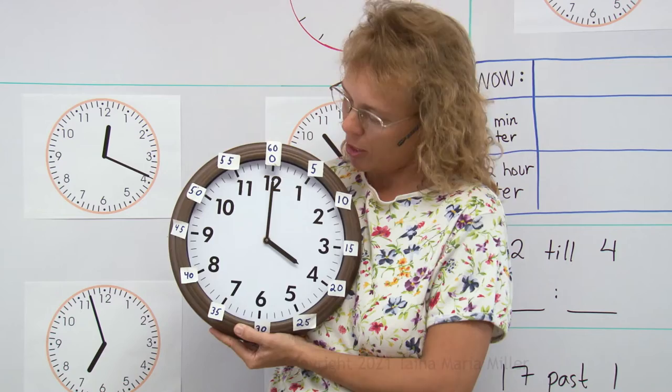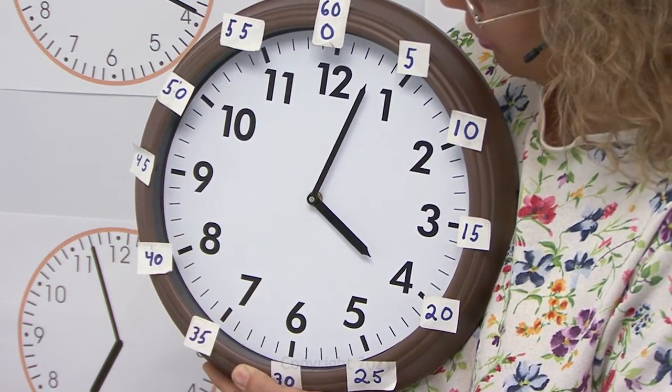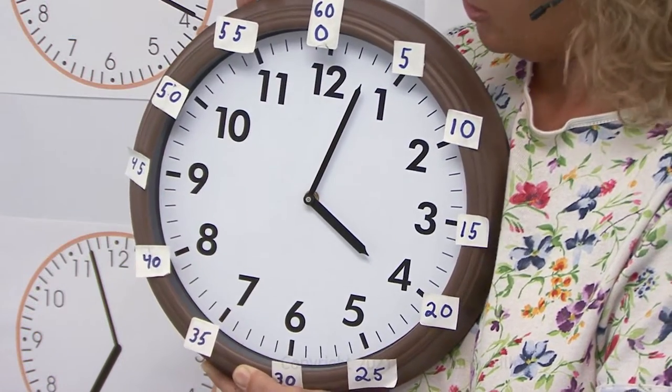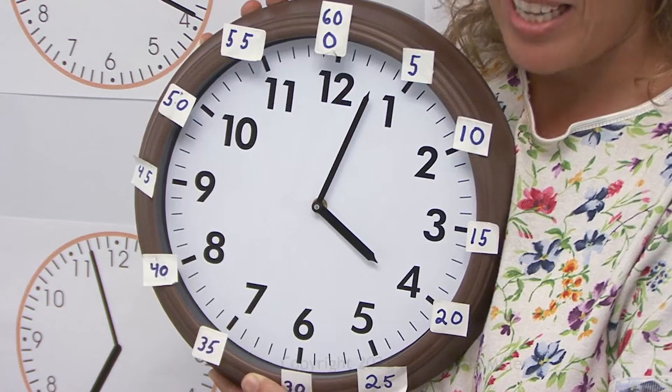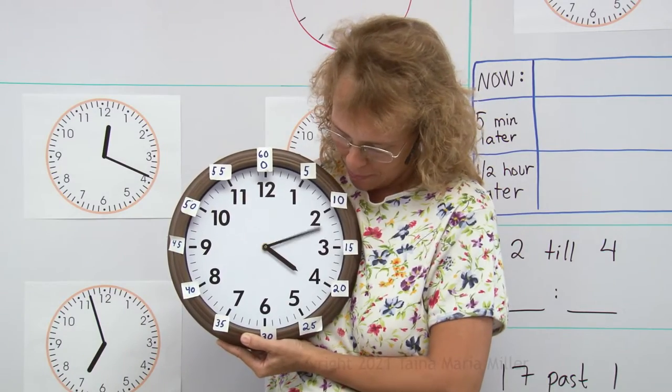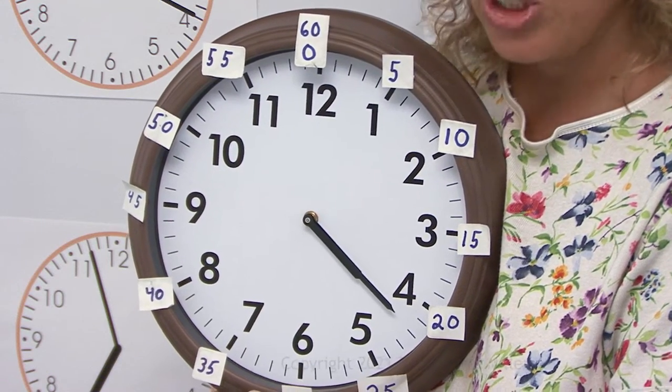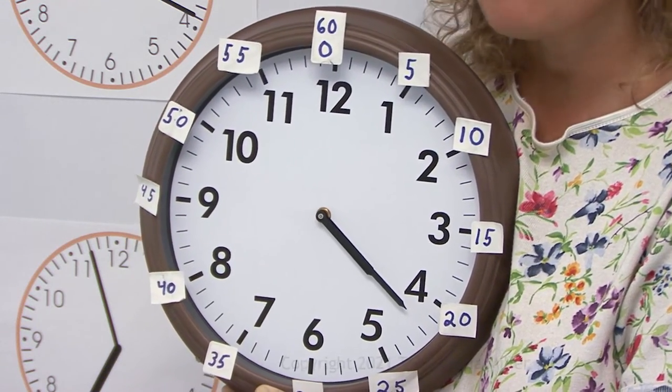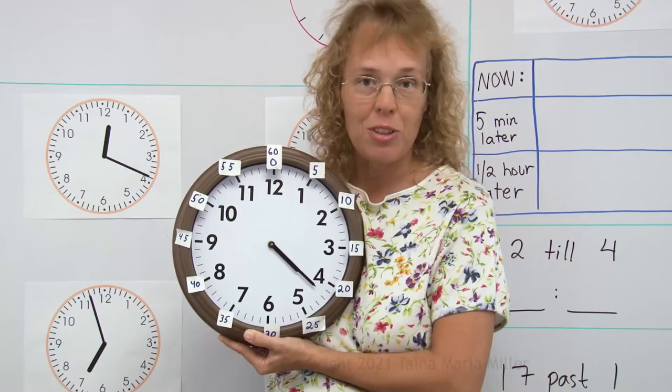Now let me turn the minute hand. Right now I have 4 o'clock, right? So when I turn it over here, so now I have 4:03, or 3 minutes past 4. Let's try another one. Now you can see that it is two little lines past the 20 minute mark. So that would be 22 minutes, right? 4:22.